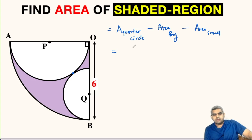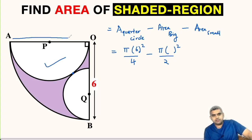Area of quarter circle will be π times its radius squared, that is 6 squared upon 4. Area of big circle will be π times radius squared upon 2 because it is a semicircle. This distance AO is the radius of quarter circle which is 6 units, and the 6 units will be the diameter for this bigger semicircle. So its radius will be 3 units, so here it will be 3 squared.